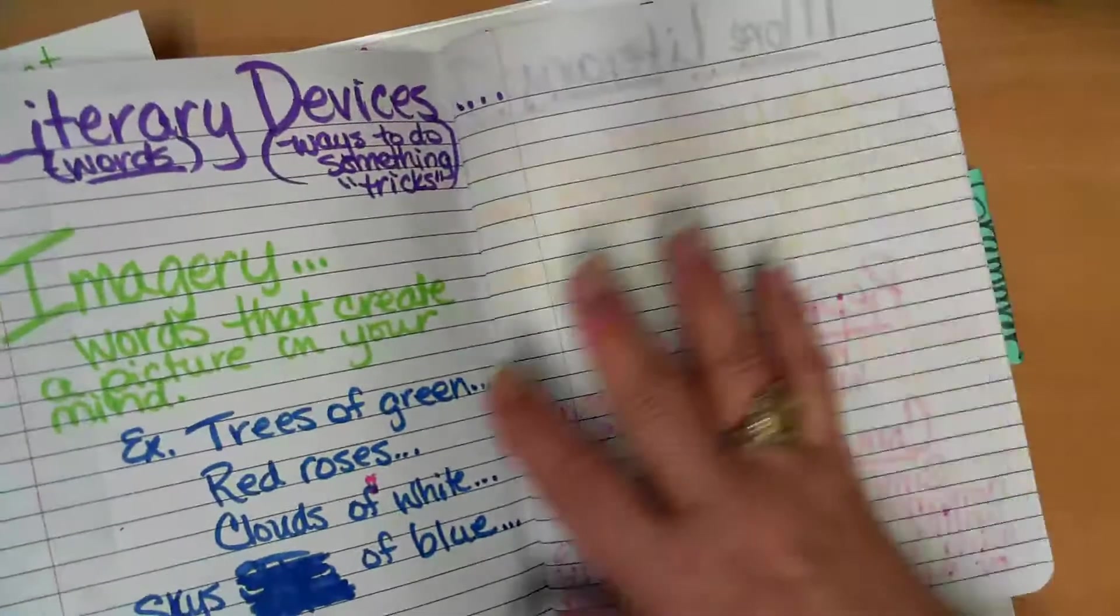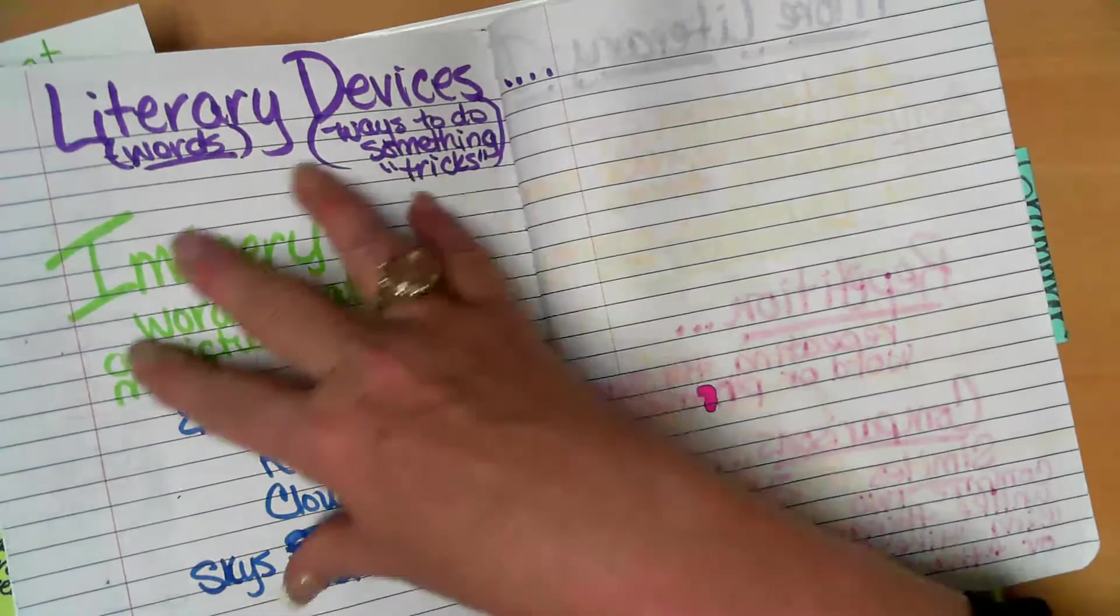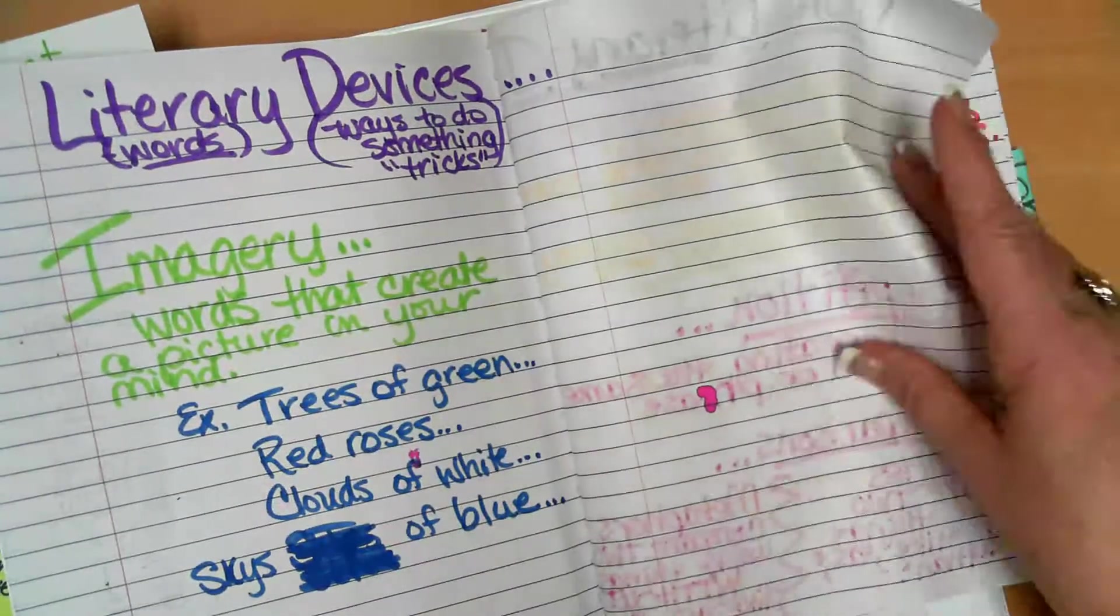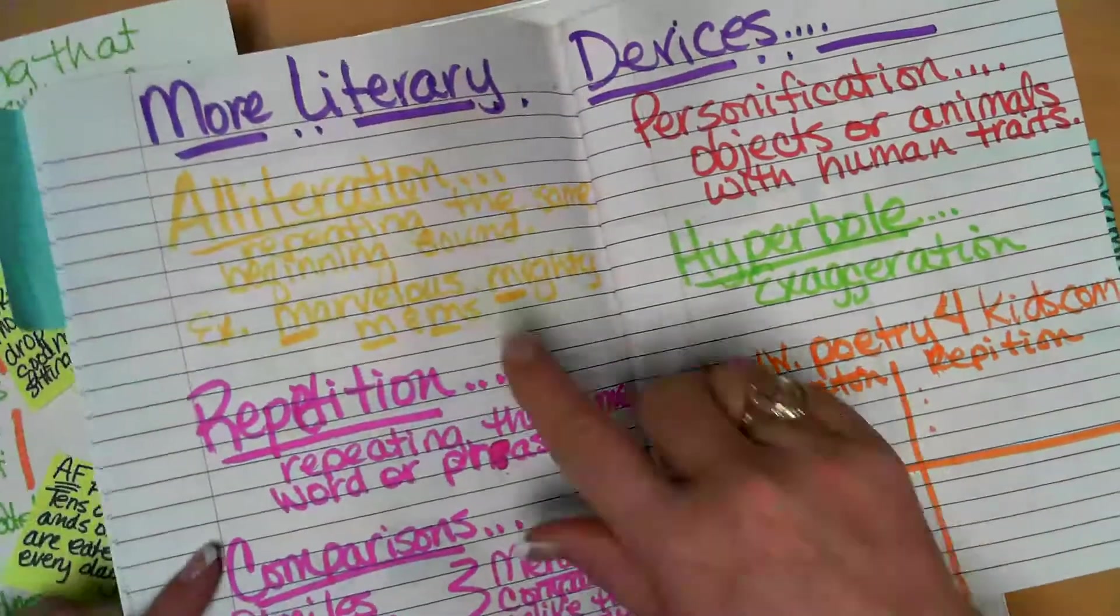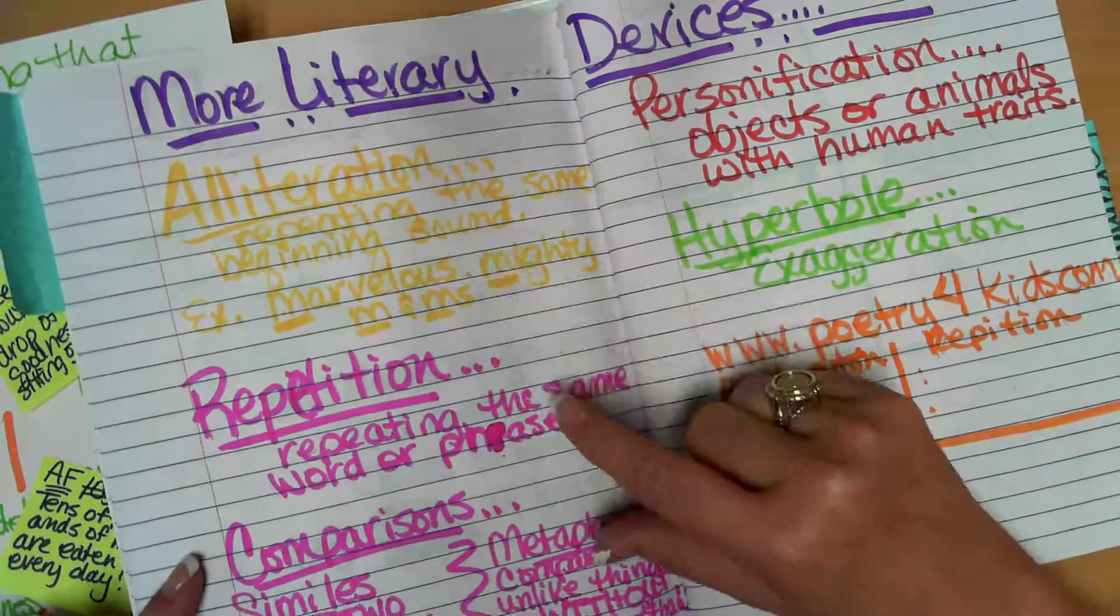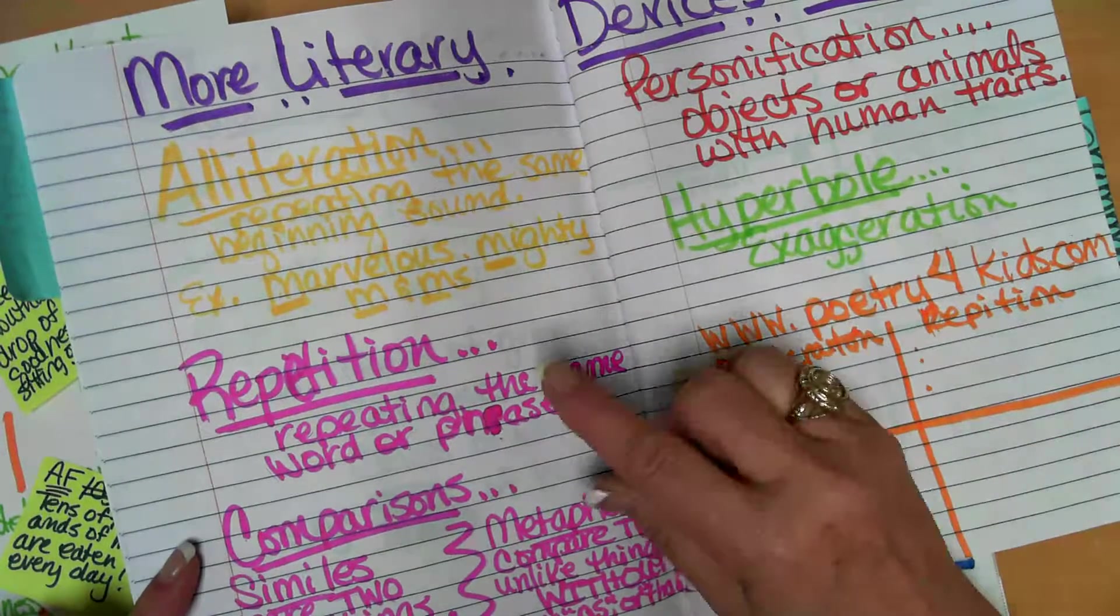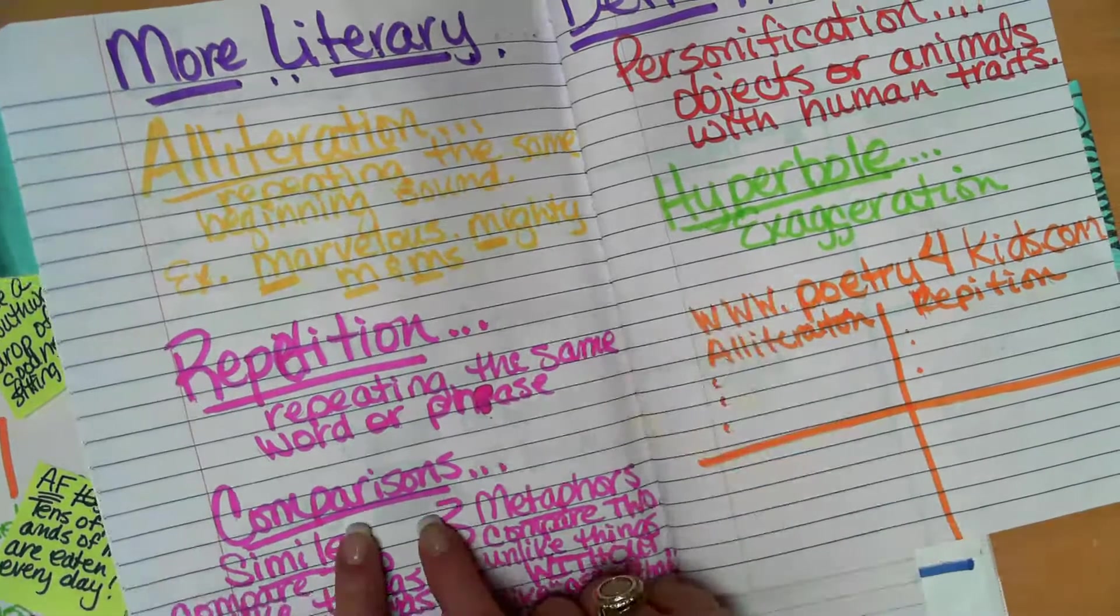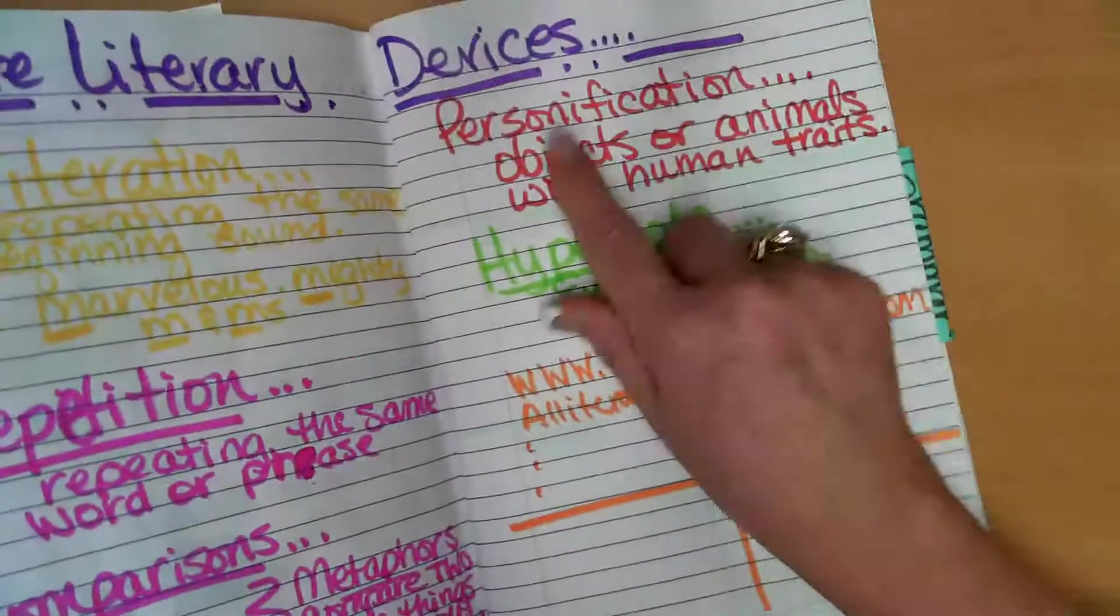So imagery, words that create a picture in your mind. You remember we did the song, What a Wonderful World, and Trees of Green, Red Roses. You have got to really stretch out your words and describe in detail. And that's your descriptive details, that imagery, describing detail in your writing.